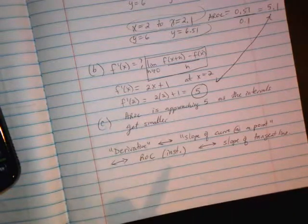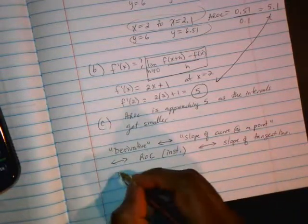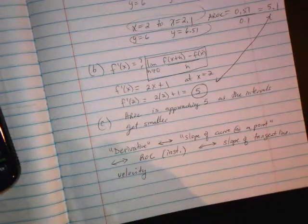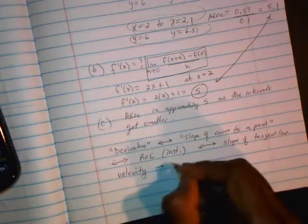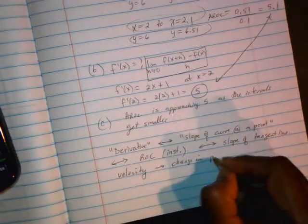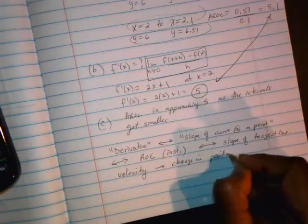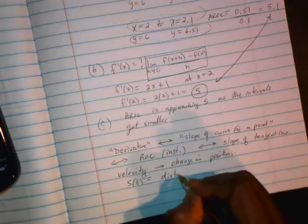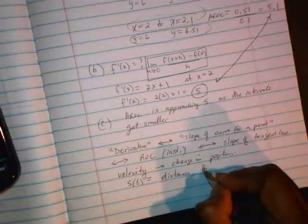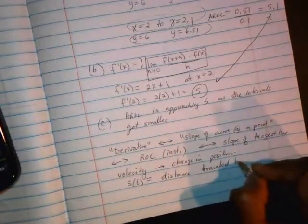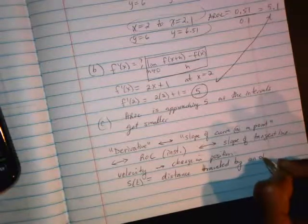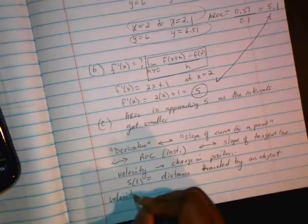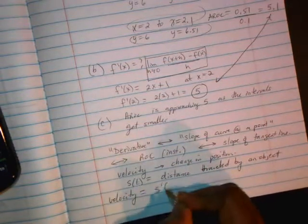And finally, we're going to see one example from physics, and that would be velocity. Velocity is the change in position. If s is the distance traveled by an object,